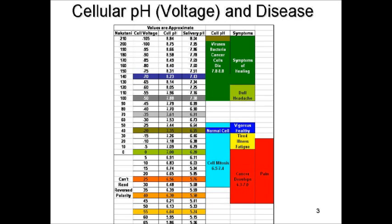When you start going up the scale — meaning your pH level is getting higher toward the alkaline side — your cell voltage shifts to the negative end. This is where healing occurs, and cancer cells actually start dying at a pH of 7.8. So that is very cool news. It's in one way very scary and in another way very exciting.